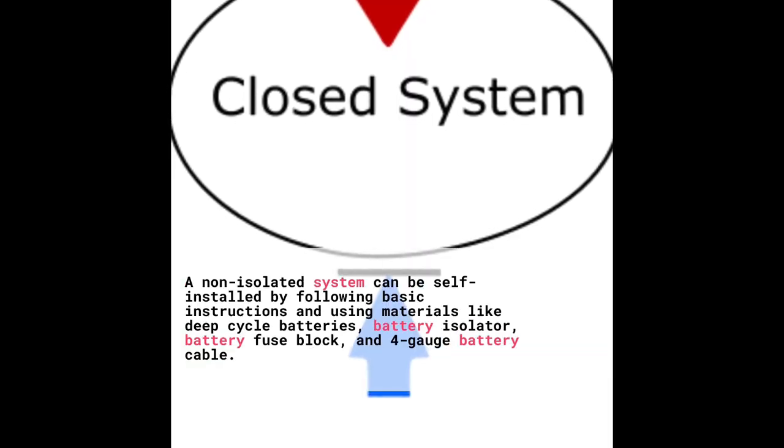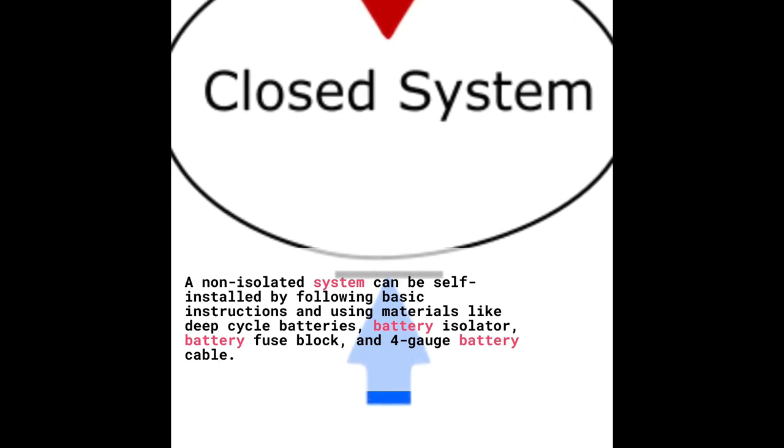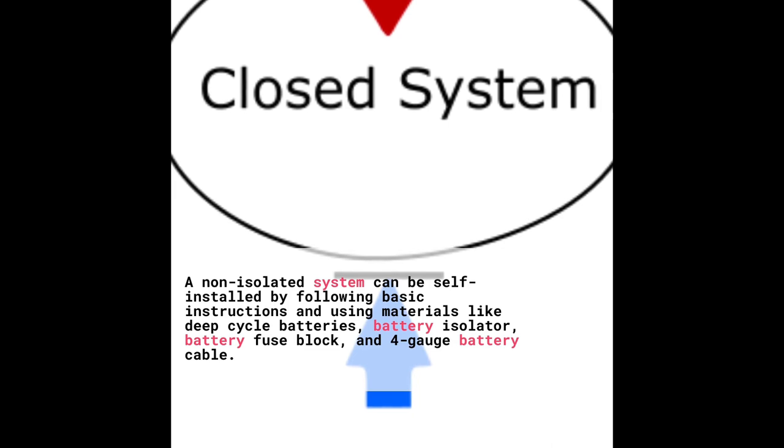A non-isolated system can be self-installed by following basic instructions and using materials like deep cycle batteries, a battery isolator, a fuse block, and 4 gauge battery cable.